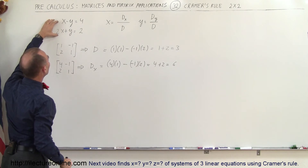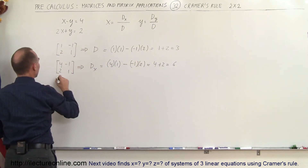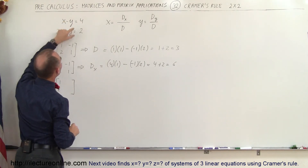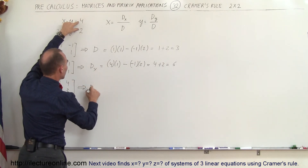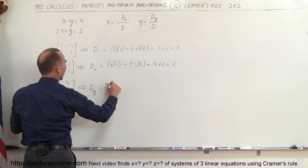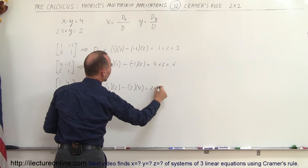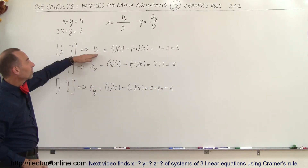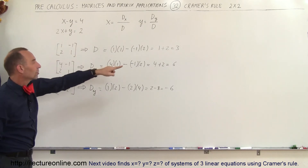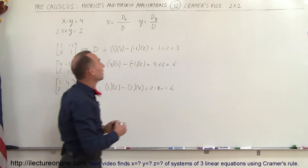Now we find D sub y by taking the same matrix but replacing the y coefficients instead. We keep the first column as 1 and 2, but replace -1 and 1 with 4 and 2. The determinant of this matrix is 1 times 2 minus 2 times 4, which equals 2 minus 8, so D sub y equals -6.